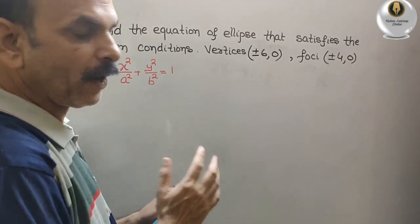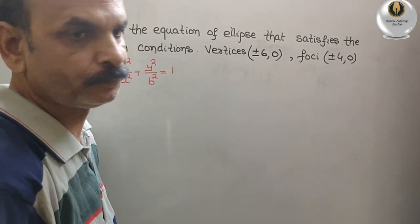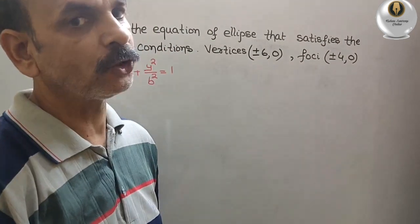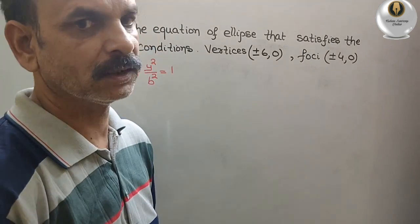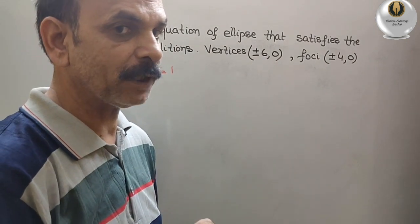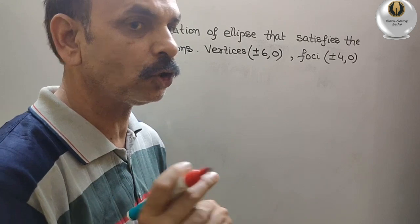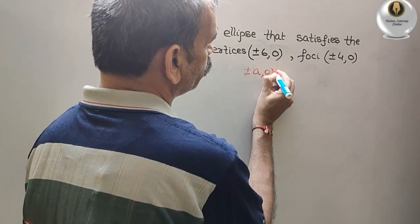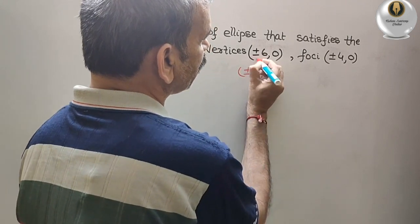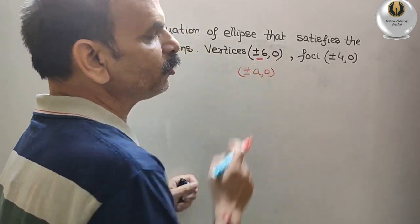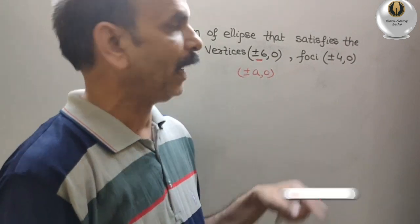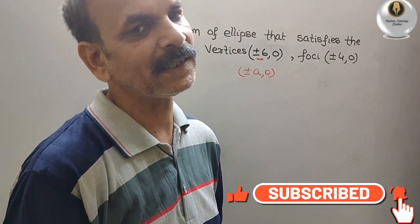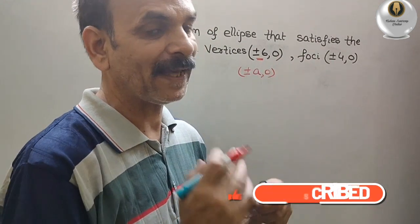Now we have to find out a square and b square. So here they have given vertices as plus minus 6 comma 0. So vertices is plus minus a comma 0. And you can see here they have given the value in x and y is 0. That means it lies on x axis. So ellipse lies on x axis.